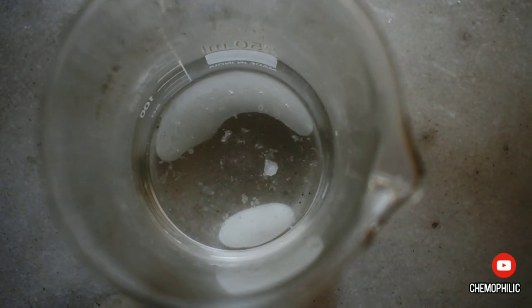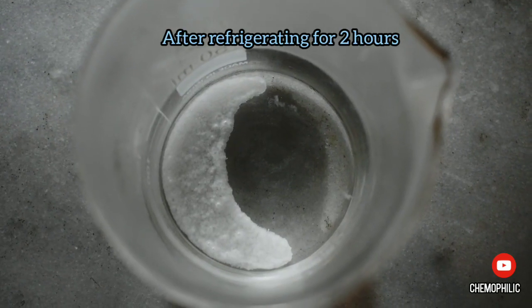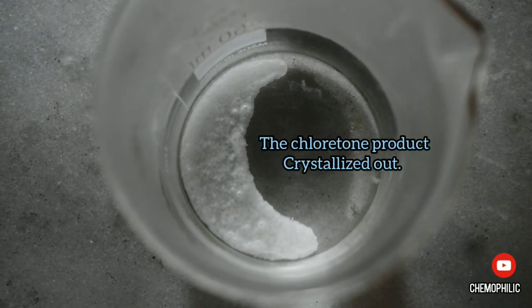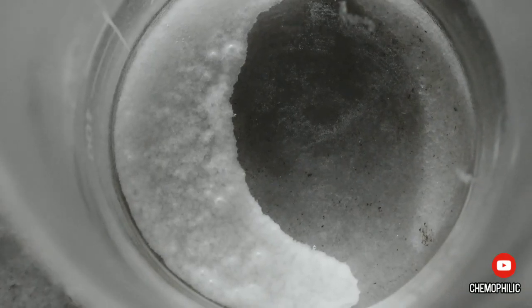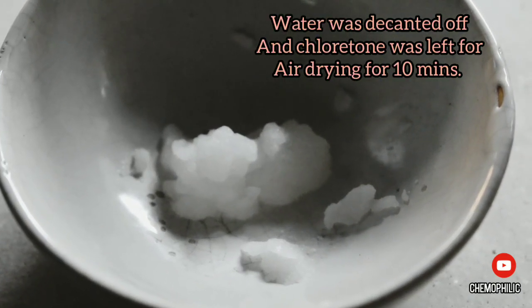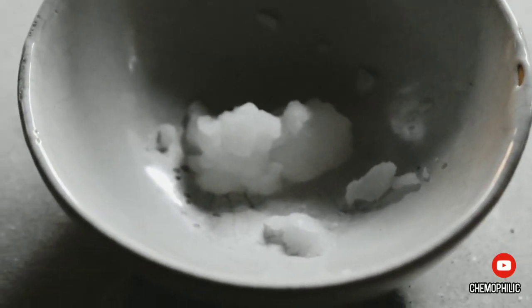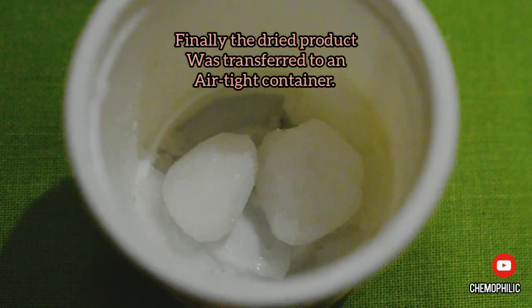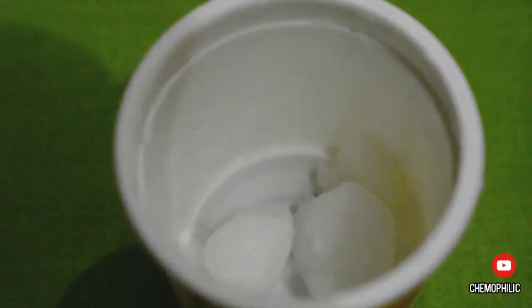Then I kept it in the refrigerator for 2 hours and now the chloritone was completely crystallized. I decanted off the water and chloritone was kept for air drying for 10 minutes. The dried product was finally transferred to an airtight container. My final yield was 62%.